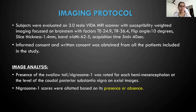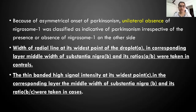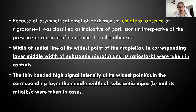Coming to the imaging analysis, presence of a swallow tail or nigrosome 1 was rated for each hemi-mesencephalon at the level of caudal posterior substantia nigra on axial images. Nigrosome 1 scores were allotted based on presence or absence. Because of the asymmetrical onset of Parkinson's, unilateral absence of nigrosome 1 was classified as indicative of Parkinson's irrespective of the presence or absence of nigrosome 1 on either side. The width of the radial line at its widest point of the droplet is taken as A, and the corresponding middle layer width of the substantia nigra is taken as B; the ratio A/B was measured in controls. The thin banded high signal intensity at the widest point is taken as C, and the corresponding middle layer width of the substantia nigra is taken as B; the ratio B/C was measured in cases.